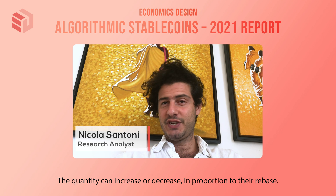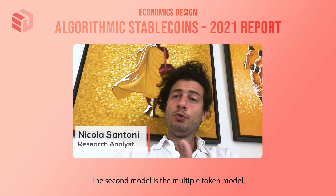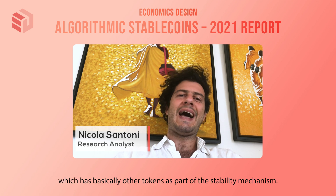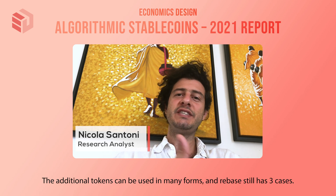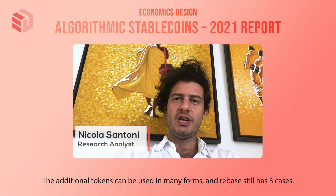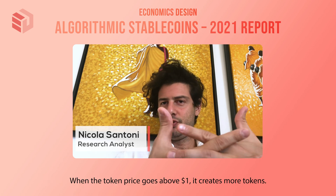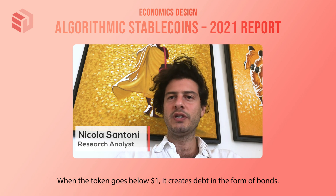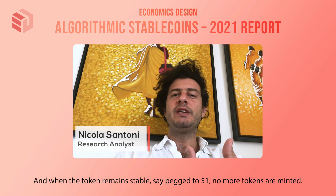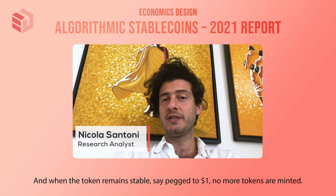The quantity can increase or decrease in proportion to the rebase. The second model is the multiple token model, which has other tokens as part of the stability mechanism. Rebase still has three cases: when token price goes above $1 it creates more tokens; when token goes below $1 it creates debt in the form of bonds; and when the token remains stable, pegged to $1, no more tokens are minted.